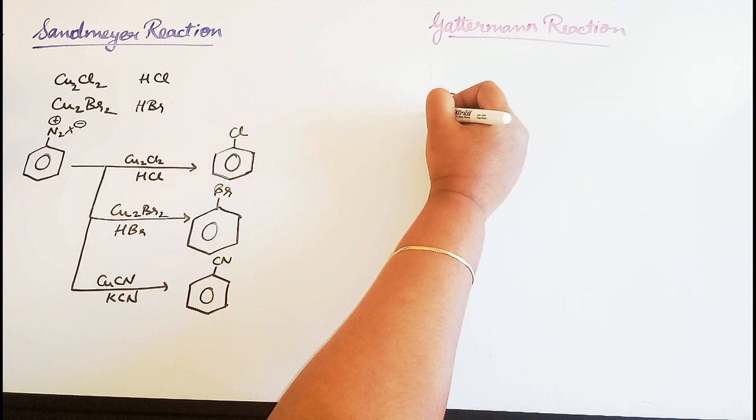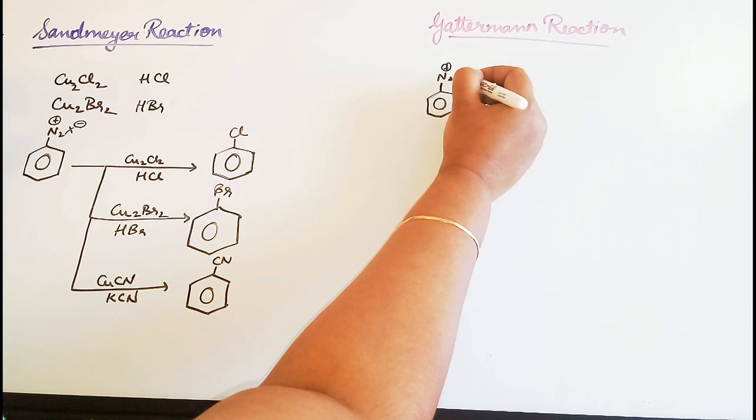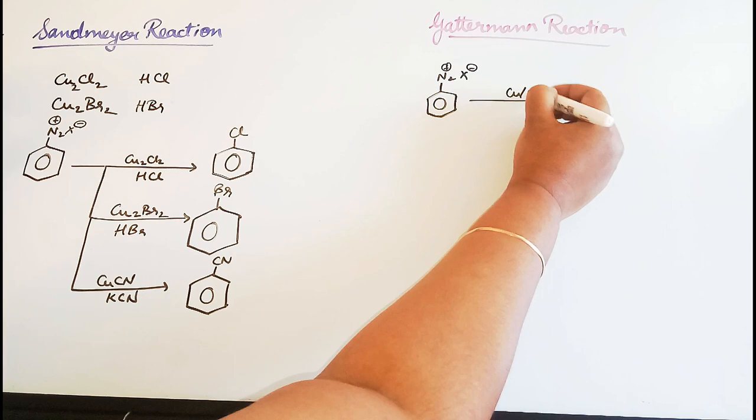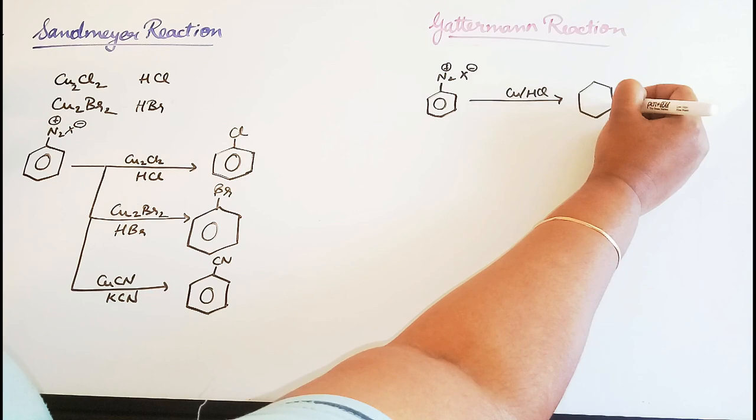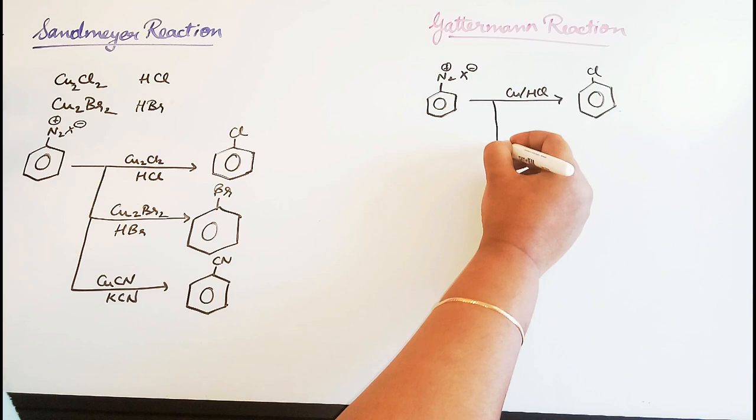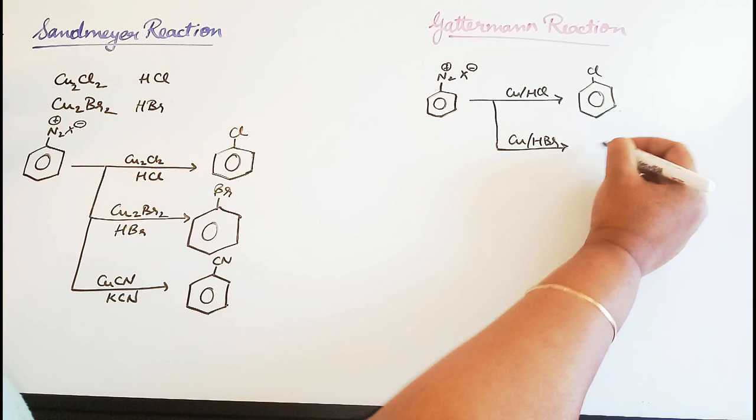So here you have a diazonium salt. Don't learn these two reactions separately, learn them together. So copper in HCl, the N2X gets replaced by chlorine. If the same reaction takes place in the presence of Cu and HBr, N2X gets replaced by Br, bromine.